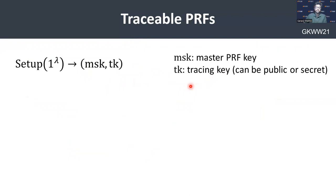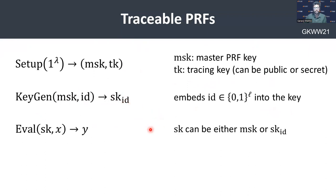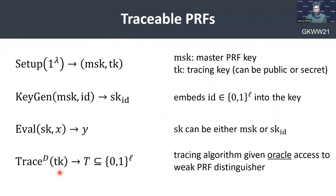The syntax of a traceable PRF consists of four algorithms. First is the setup algorithm, which samples a master secret key and a tracing key — the tracing key can be public or secret. Then comes the key generation algorithm, which embeds an identity into the key: it takes as input an identity ID and uses the master secret key to produce the marked key SK_ID. The eval algorithm performs evaluation of the PRF. Finally, we have the trace algorithm, which is given oracle access to a weak PRF distinguisher and should output an identity or a set of identities T.